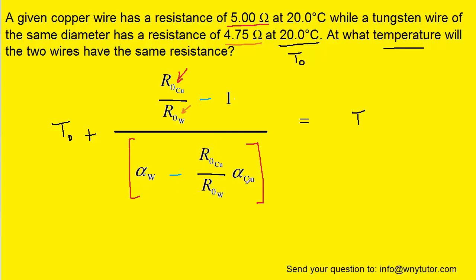These alpha values can be looked up in a table. Remember that these are the temperature coefficient of resistivities and there should be a table in your chapter that gives the value for both tungsten and copper.